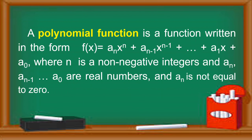About polynomial function: a polynomial function is a function written in the form f of x equals a sub n times x to the n, plus a sub n minus 1 times x raised to n minus 1, plus dot dot dot, plus a sub 1 times x, plus a sub 0. Where n is a non-negative integer, and a sub n, a sub n minus 1, and a sub 0 are real numbers, and a sub n is not equal to 0.